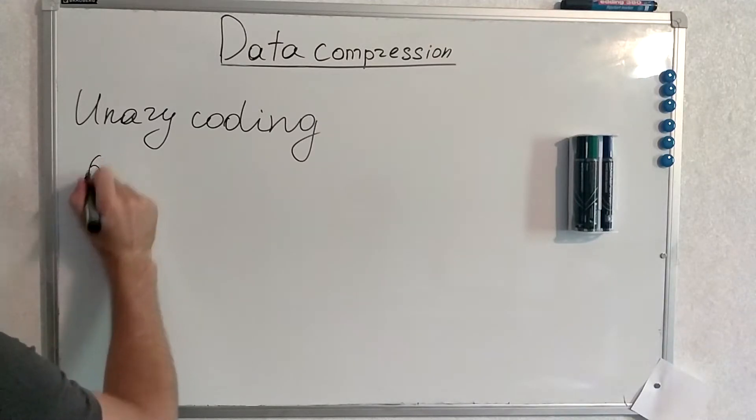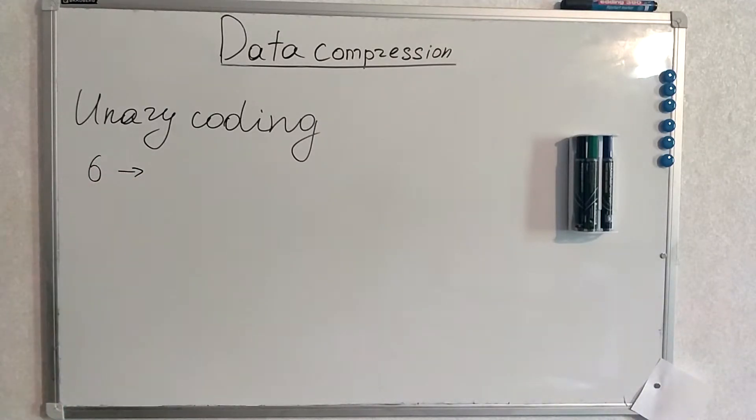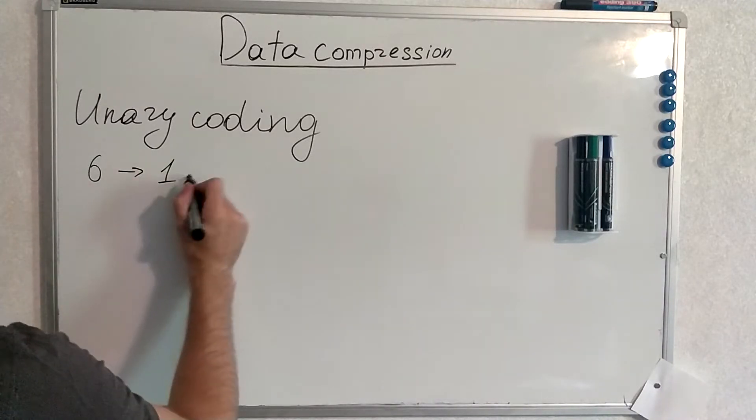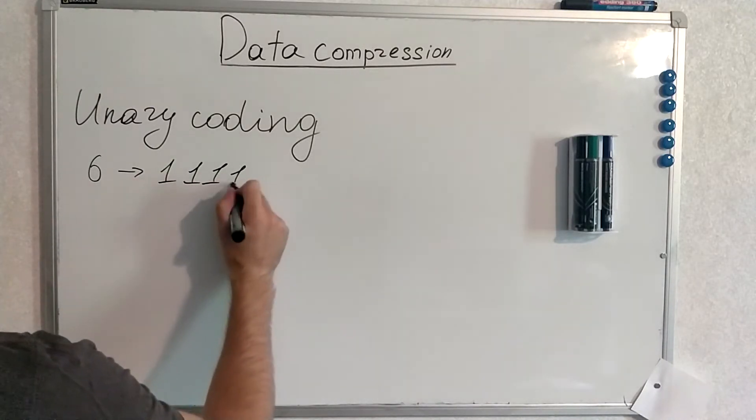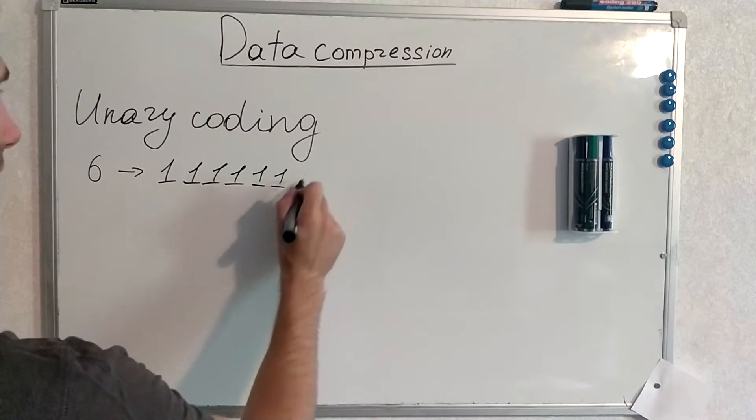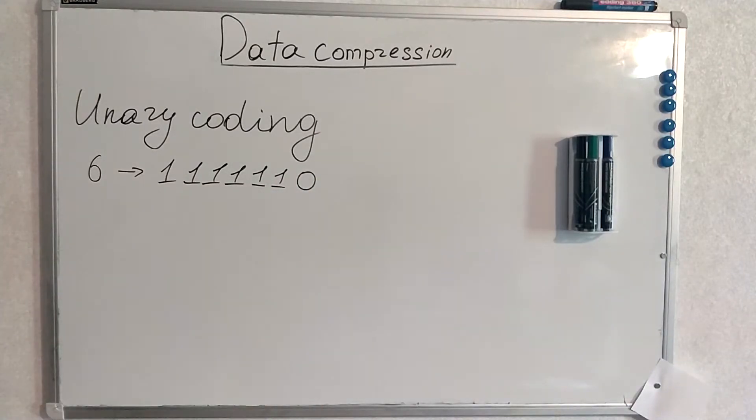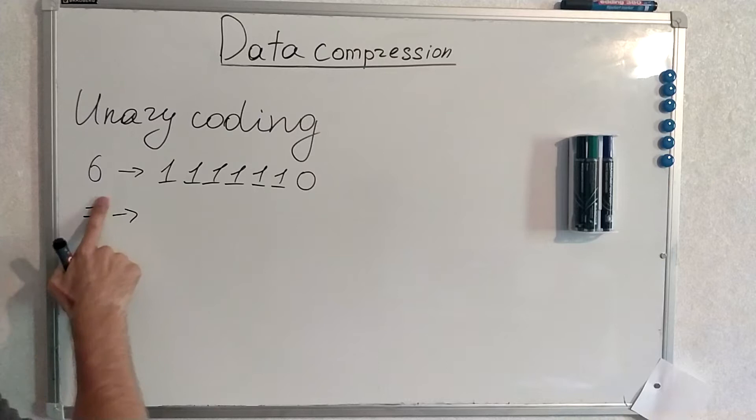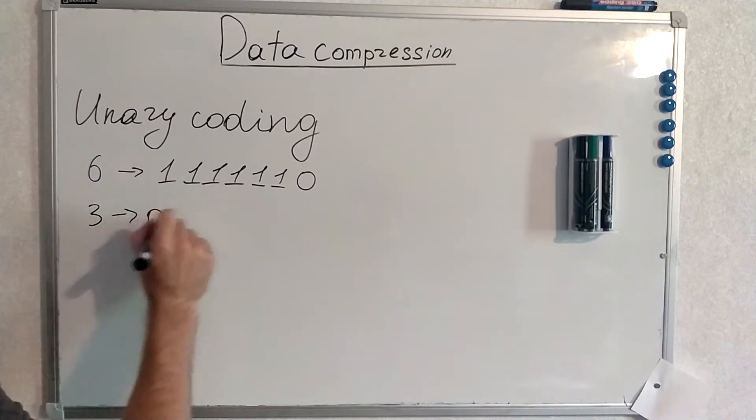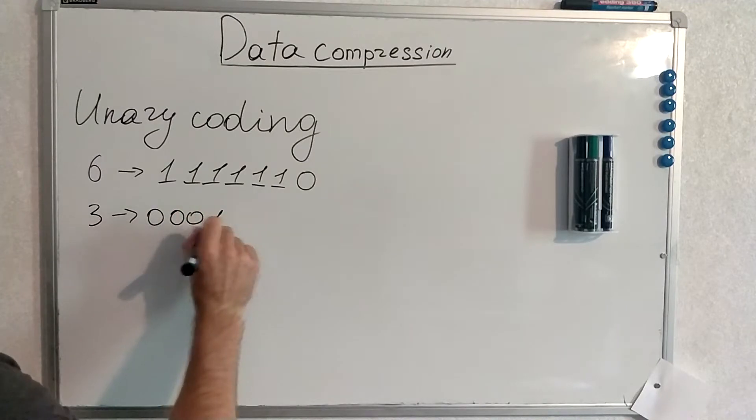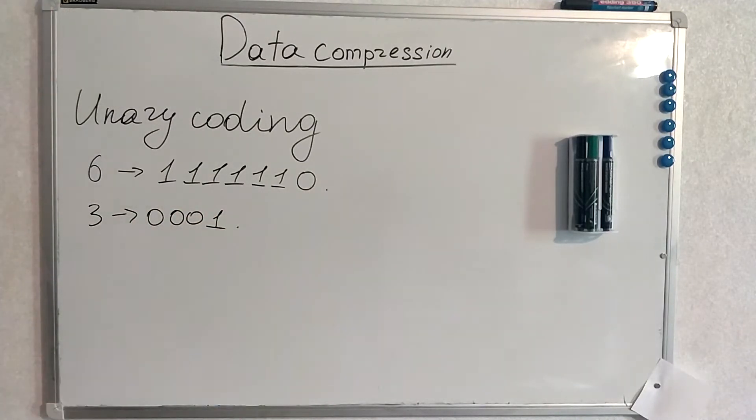Okay, let's try to encode 6 with unary coding. This way of coding does nothing but this or... No, I don't want to write down this many zeros. Okay, this is unary coding.